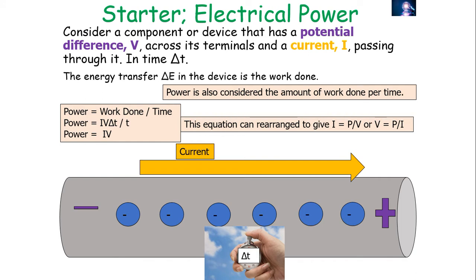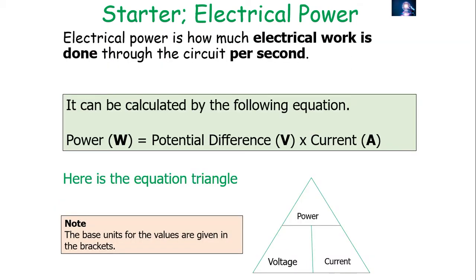Power — the work done per unit time — is given by P = IV. This can be rearranged to I = P/V or V = P/I. Electrical power is how much electrical work is done every second: a power of 10 watts means 10 joules of work is done per second. The base units are: power in watts, potential difference in volts, and current in amps. This equation can be used to calculate the power of any electrical device — a bulb, resistor, motor, or buzzer.